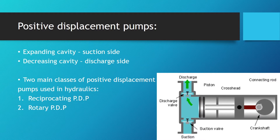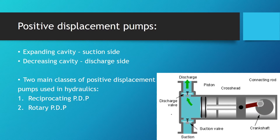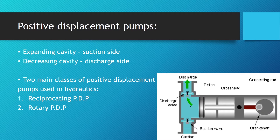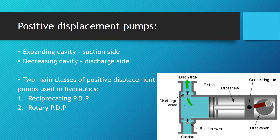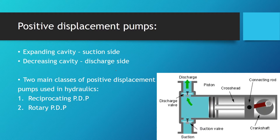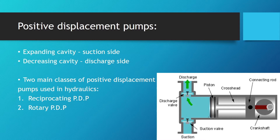Here you can see the function of a positive displacement pump — more precisely, the piston pump — moving right and left, pumping fluid. We basically have an expanding cavity on the suction side: when the piston goes right, it expands the volume and the fluid gets sucked in.